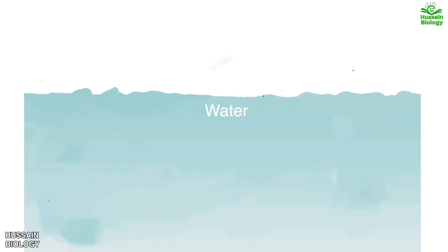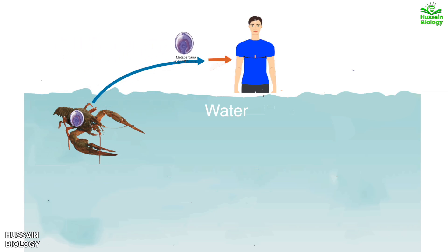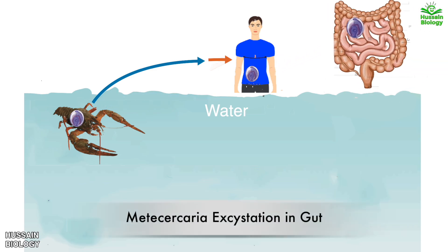Now let's see the life cycle of the lung fluke in detail. We start the cycle from the infected crayfish shown in the diagram. The raw or undercooked crayfish contains encysted metacercaria larvae. After eating the infected crayfish, the metacercaria larvae reach the duodenum part of the gut, where they excyst and penetrate the intestinal wall.